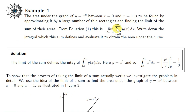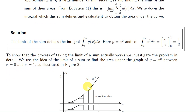Let's take an example of this limiting procedure. We will take the graph of y equals x squared between x equals 0 and x equals 1, and we will calculate this limit. We know from integration that this limit is the integral of x squared dx from 0 to 1. Integrating x squared is straightforward — we apply our limits and we get one third. Let's now do it using this limiting procedure.